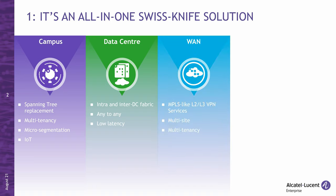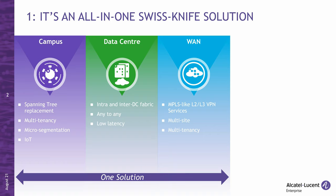The third area is the WAN. SPB offers Layer 2 and Layer 3 VPN services which are similar to MPLS services, yet much simpler to deploy and operate. These services can deliver multi-tenanted connectivity to multiple sites connected across the WAN. The fact that you can address all three problems with one solution is quite unique to SPB.